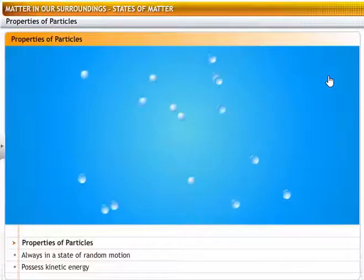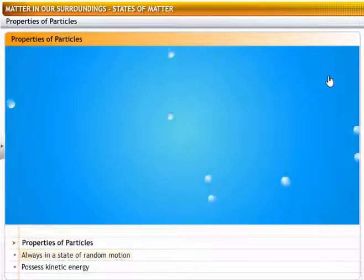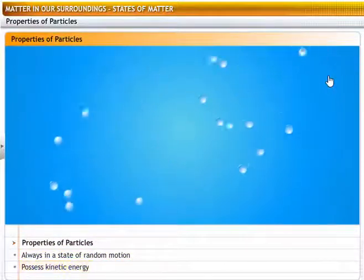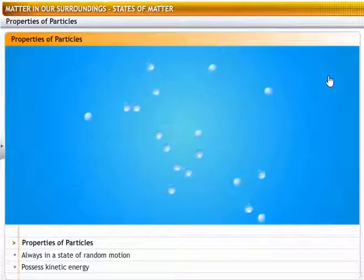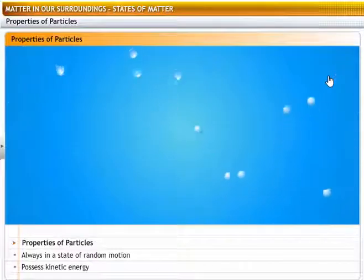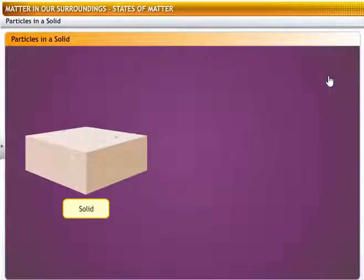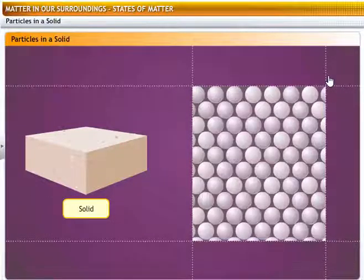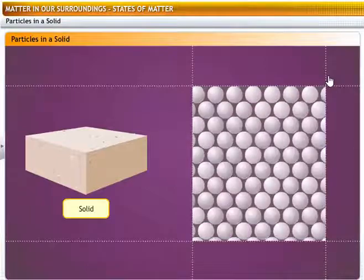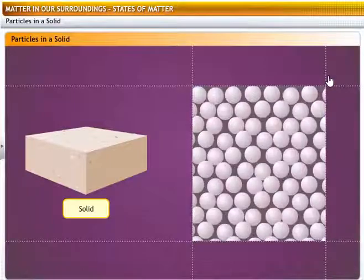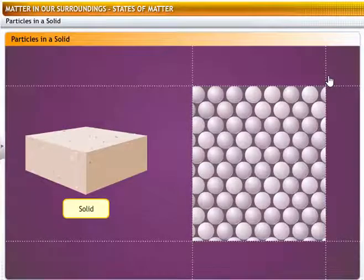Particles in matter are in a constant state of random motion, and hence they possess kinetic energy. They also attract each other, but this mutual force of attraction is effective only when the particles are very close to each other. When the particles are bound together firmly, they form solids. In solids, the particles simply vibrate about their fixed positions, because their kinetic energy is low and not enough to let them break away from their mutual force of attraction. Therefore, solids have definite shapes and volumes, and they do not flow or diffuse.